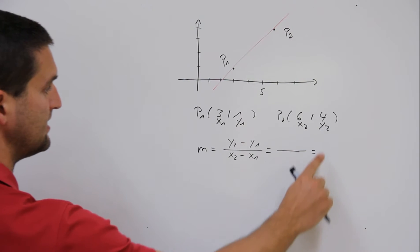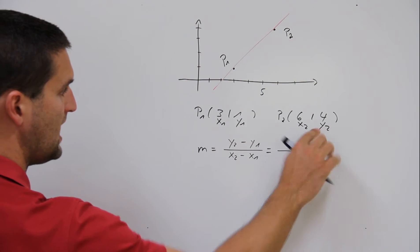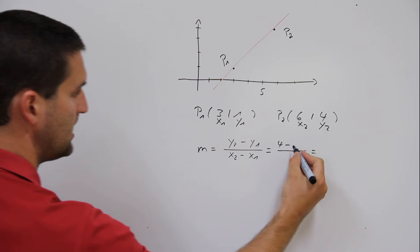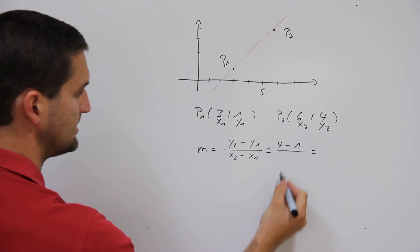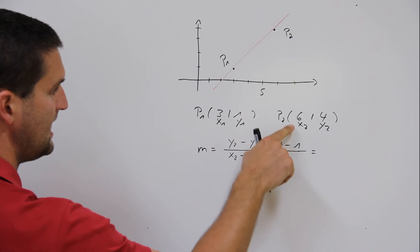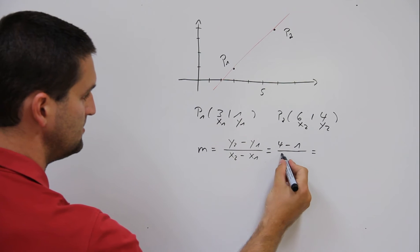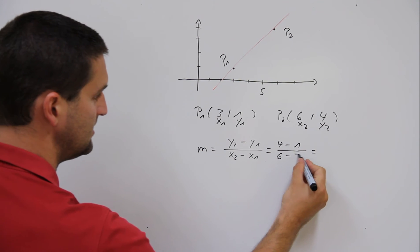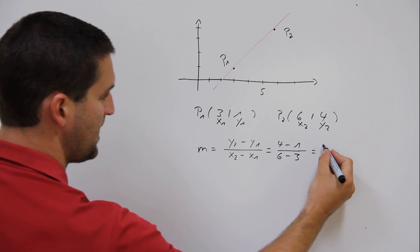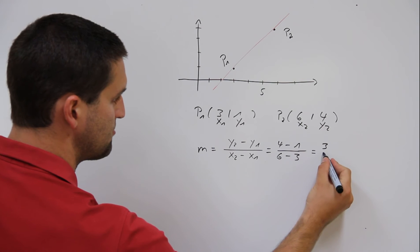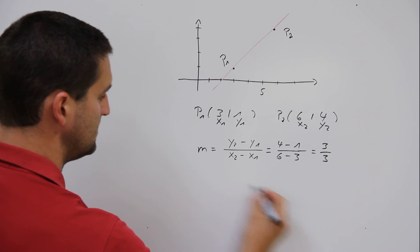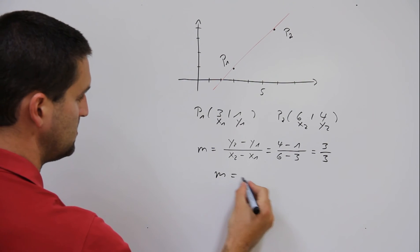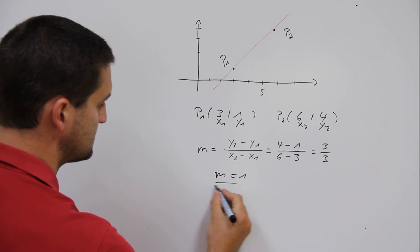So the last thing you have to do is set in y2 minus y1 divided by x2 minus x1, and we have 3 divided by 3. So m is equal to 1 in this case.